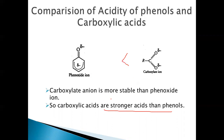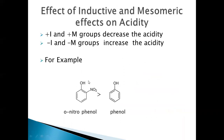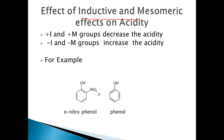Therefore, carboxylic acids are stronger acids than phenols — carboxylic acids are more acidic than phenols because the carboxylate anion is more stable than the phenoxide ion. Now let's see the effect of inductive effect and mesomeric effect on the acidity of phenols and carboxylic acids. +M and +I groups will decrease acidity.